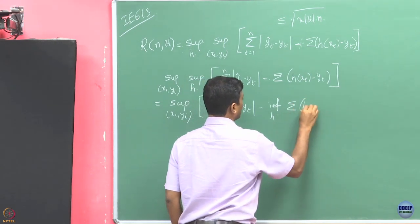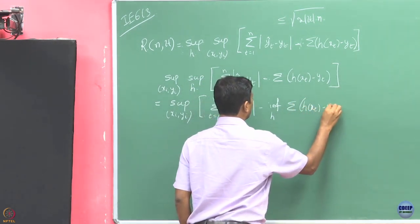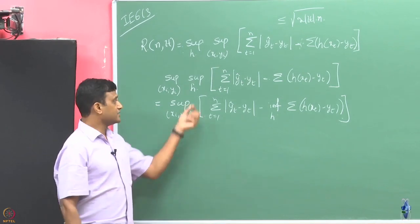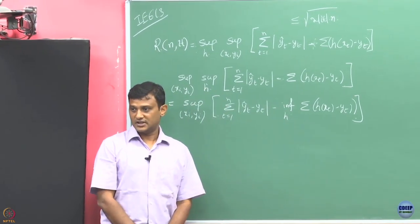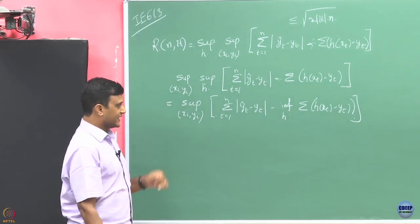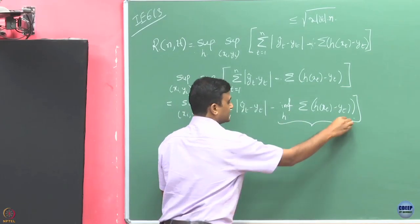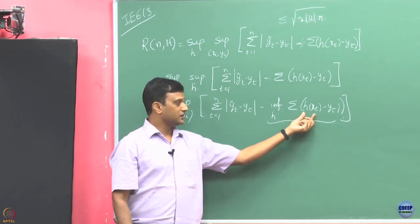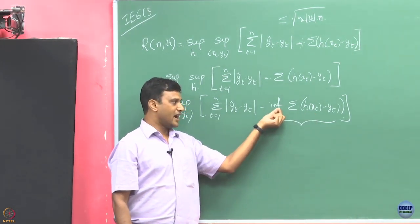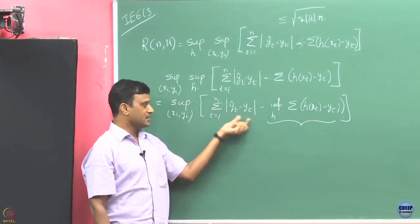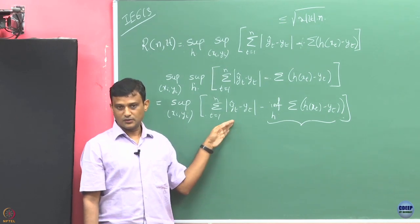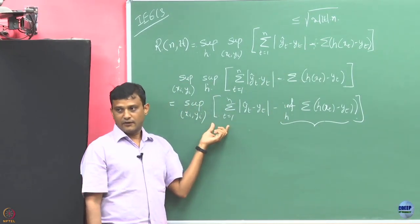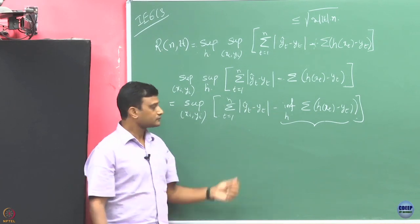If we rewrite this quantity a bit, pulling the supremum inside, it becomes equivalent. Given a sequence, we ask: what is the best you could have gotten in hindsight? This is the loss you incurred; you are looking at which hypothesis is the best, and comparing that against what you actually got. All our earlier bounds were valid for this formulation as well.